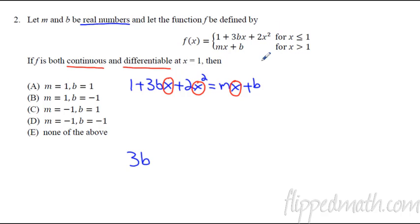So the derivative of this first piece, derivative of 1 is nothing, zero. The derivative of this term would be 3b. The derivative of this term would be plus 4x, and then that has to equal the derivative of the second piece, which is just m. See, it's a coefficient. So the derivative here is m, the derivative of b is a constant, so it's a zero. Then that's it. So when does this happen? When x equals 1.